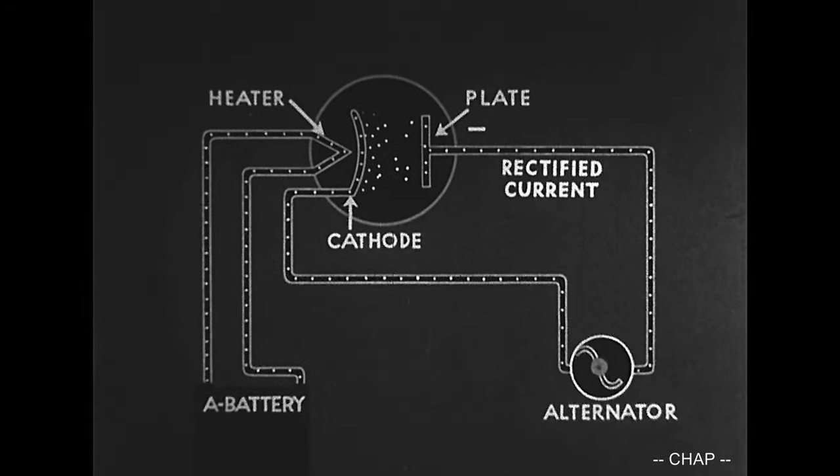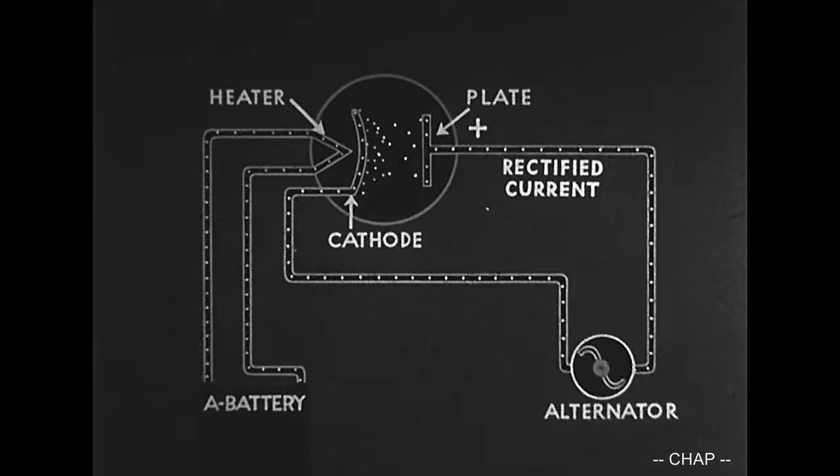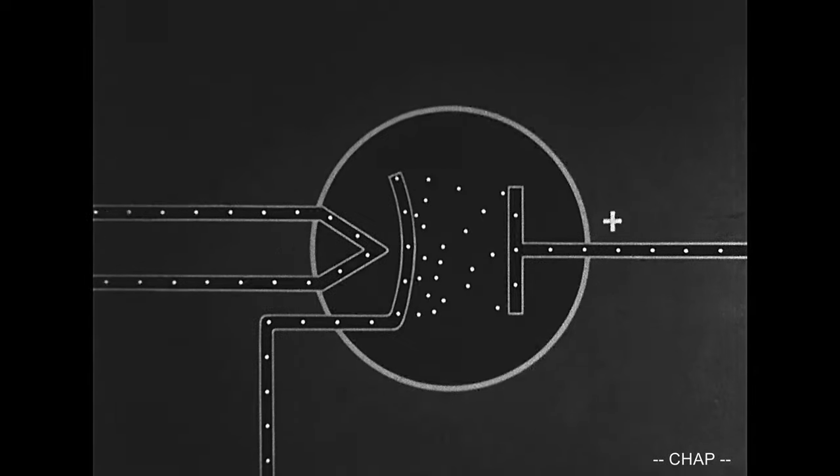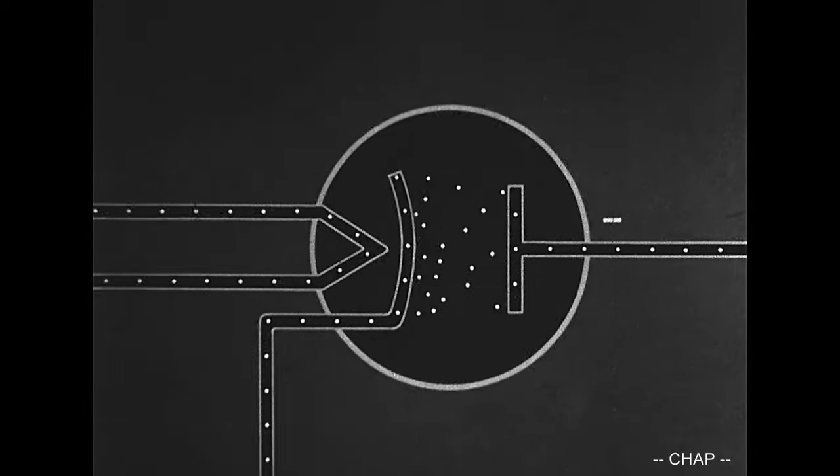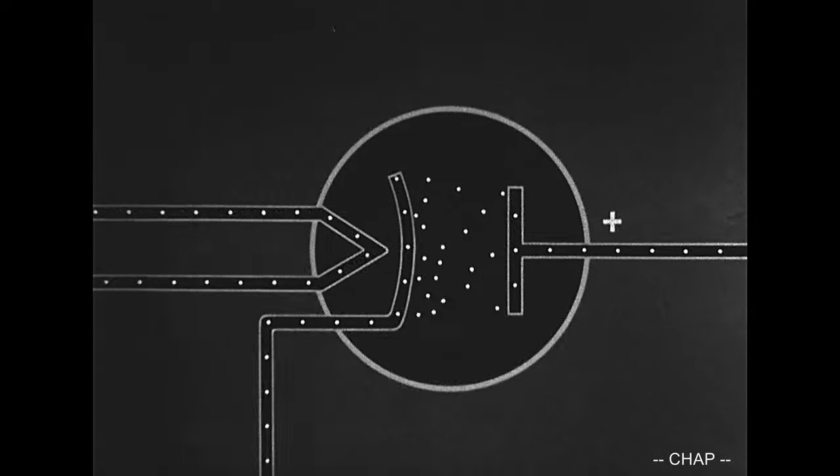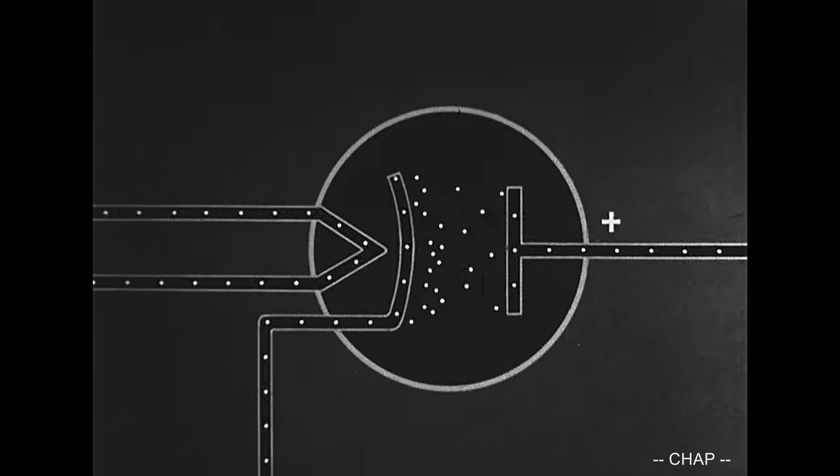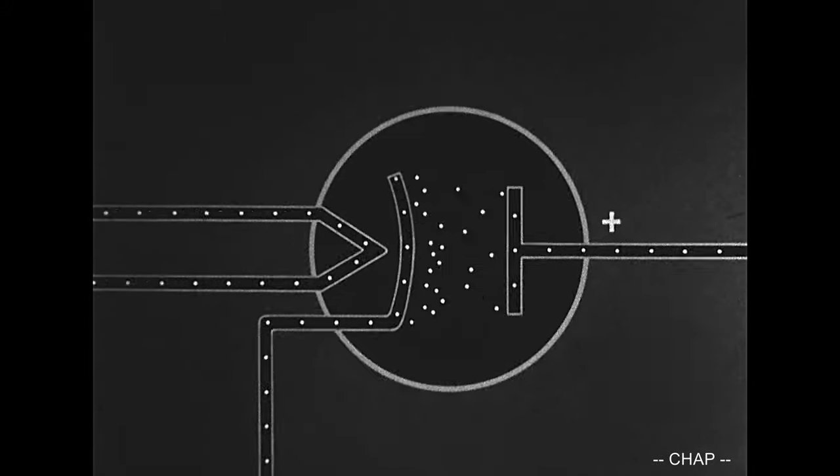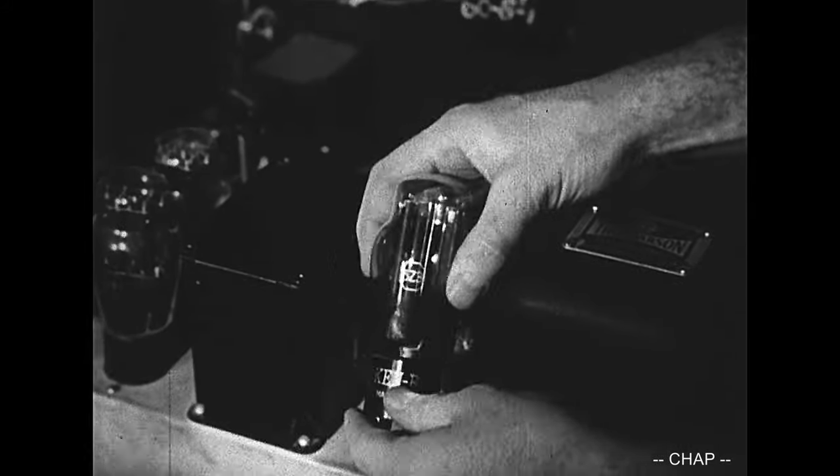In such a circuit, the current flowing from the plate is a pulsating current, flowing when the plate is positive, stopping when it is negative. Thus the diode tube may be used to supply direct pulsating current.